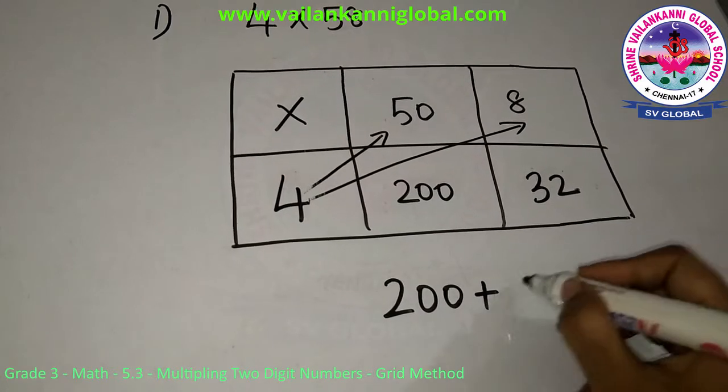So 4 times 5 is 20, with the 0 making 200. 4 times 8 is 32. Finally, I will add the answer 200 plus 32 which is 232.